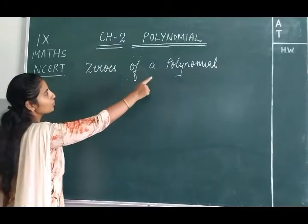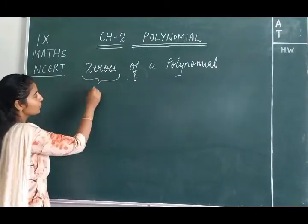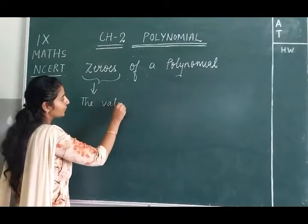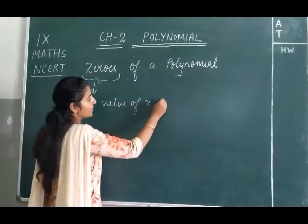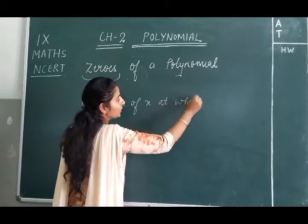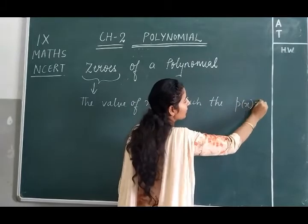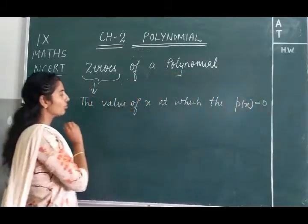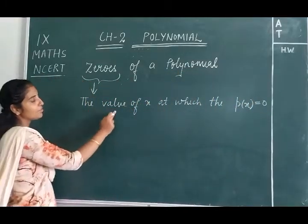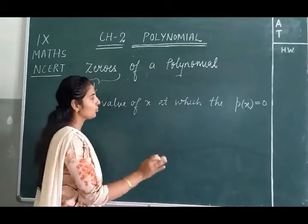First of all, what is the meaning of zeros of the polynomial? The value of x at which the given polynomial becomes 0 — that is the meaning of zero. The zero is the value of x at which p(x) becomes 0.